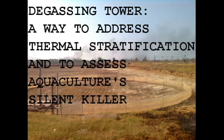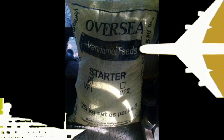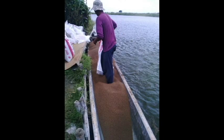Nowadays, aquaculture farming has been more complicated compared to the past decades. Several inputs are to be considered, particularly the use of artificial diets or feeds, which covers 50-60% of the total production cost.